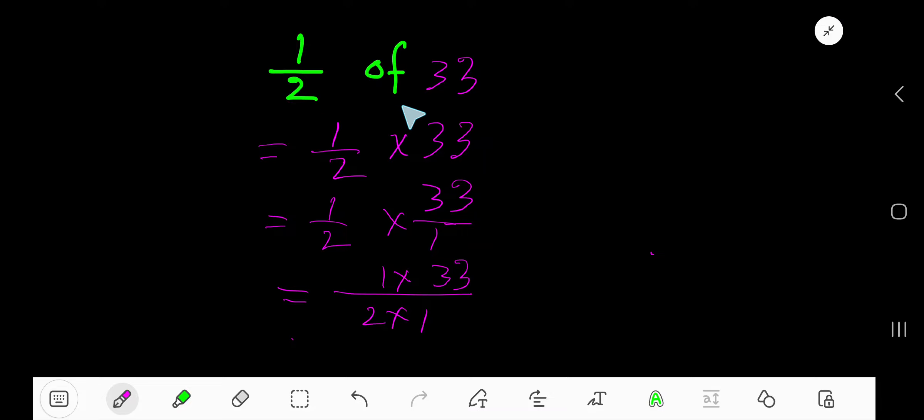Half of 33, so we use the multiplication sign. Now 33 is a whole number, so we need to change this whole number into a fraction, considering one as the denominator. Now multiply the top number together and the bottom number together.